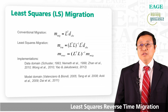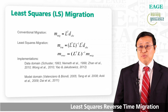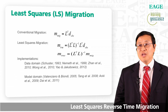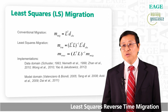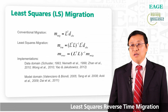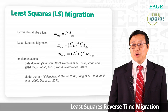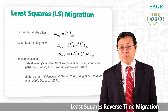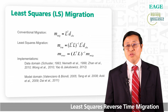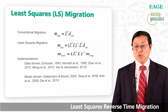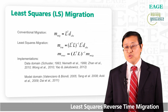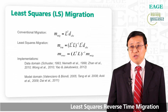There are two categories of implementation — one is in the data domain, one is in the model domain. Here is a list of references for this study. Even though this approach is accurate, the Hessian matrix is huge. In practice, especially in 3D, it is almost impossible to get an accurate inverse. Typically, people search for an approximate inverse.